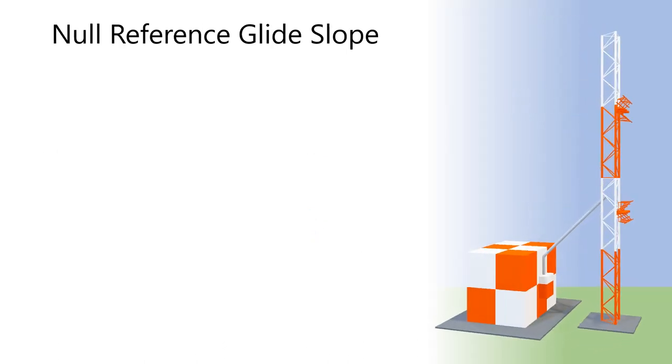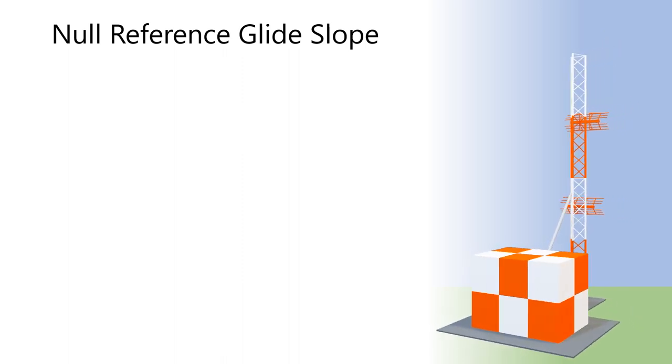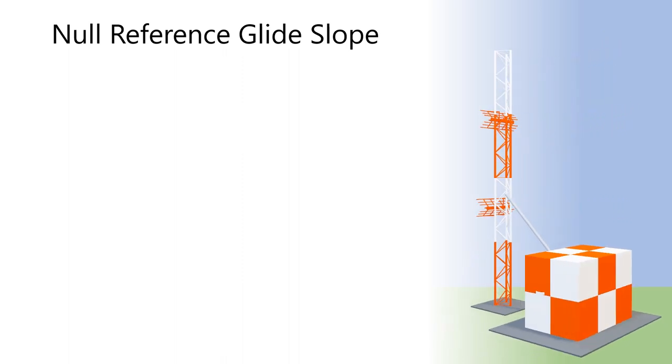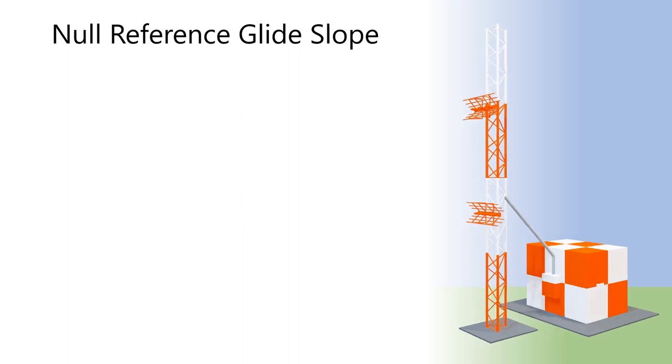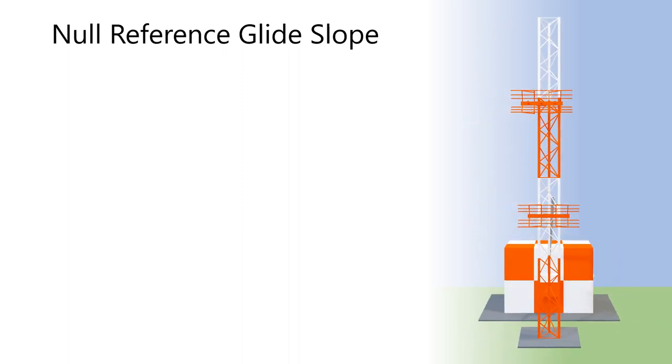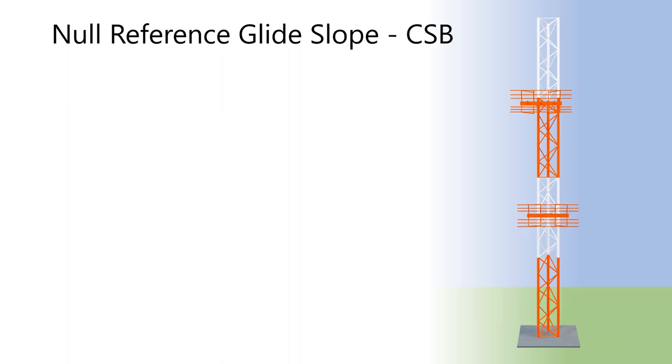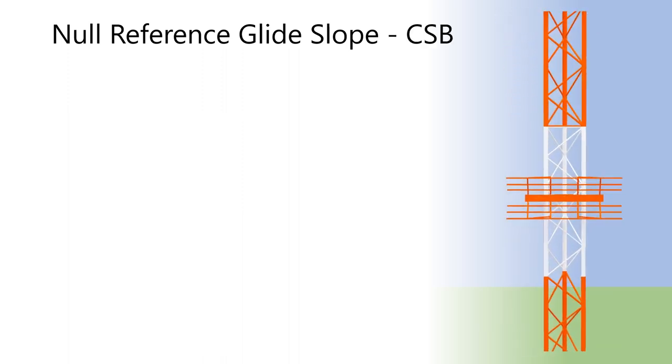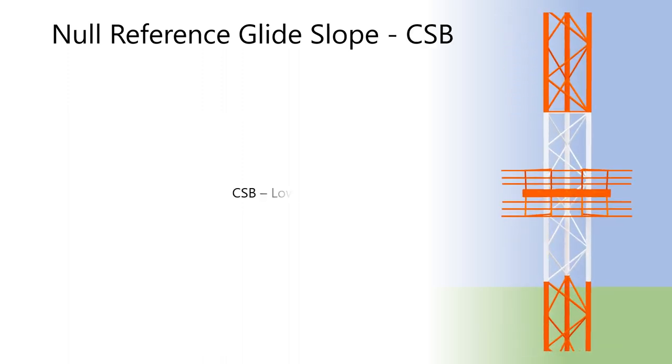Here we can see the null reference glide slope with two antennas mounted on a 40-foot tower. Behind the tower is the shelter containing the transmit and monitoring equipment.